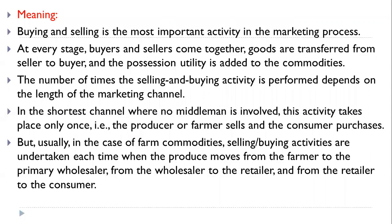This exchange function creates possession utility — this is a very important point to underline for objective questions. The number of times the selling and buying activities are performed depends on the length of the marketing channel, which is the route or path through which produce moves from producer to consumer. In the shortest channel, where no middleman is involved, this activity takes place only once — the producer or farmer sells directly to the consumer.